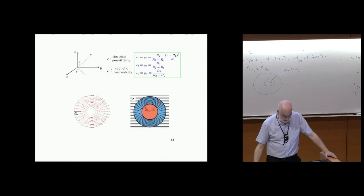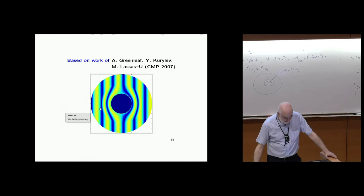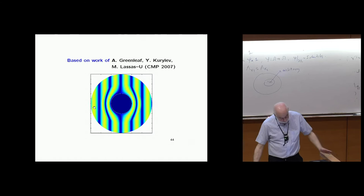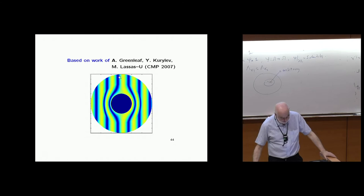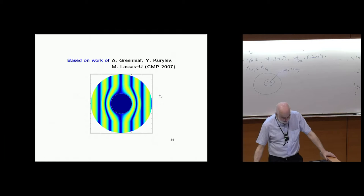This is an extremely simple idea. Here is a simulation based on this work for the waves — not just the rays. A plane wave comes in from a particular direction, goes around the object, and when measured on the other side you get exactly the same as if nothing were there.